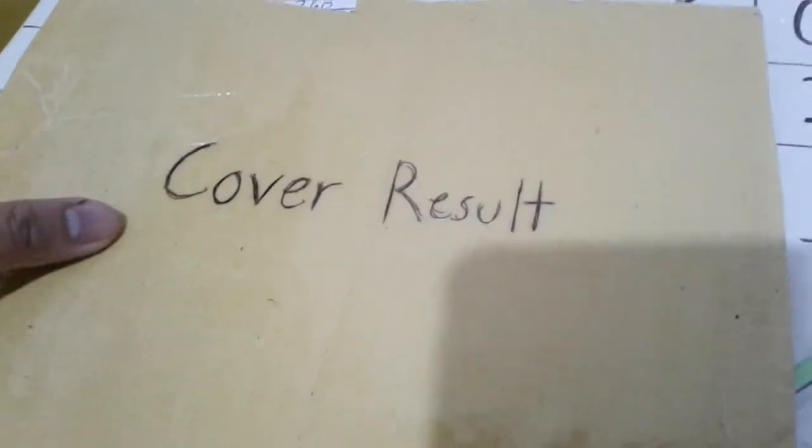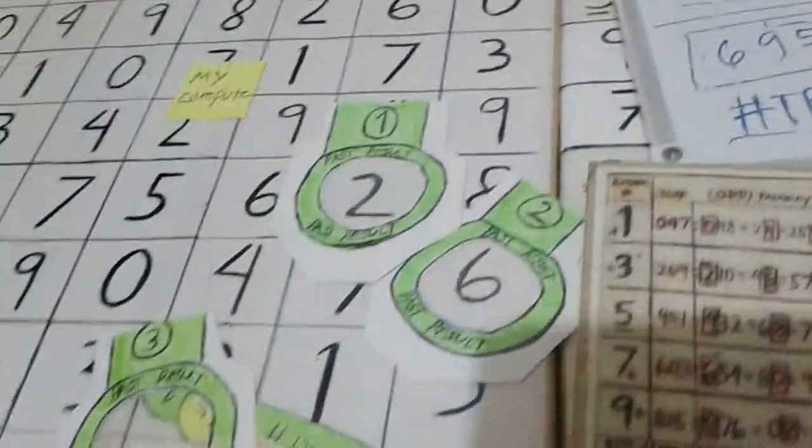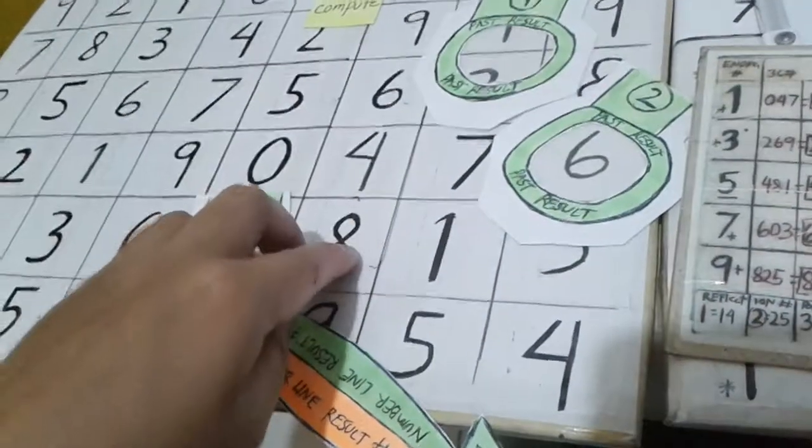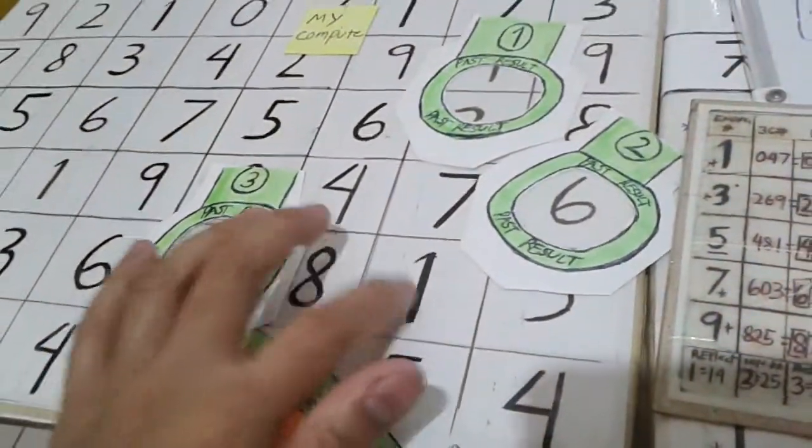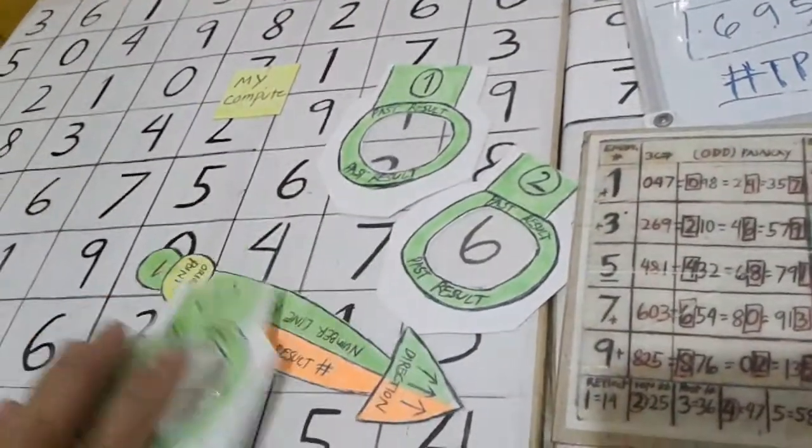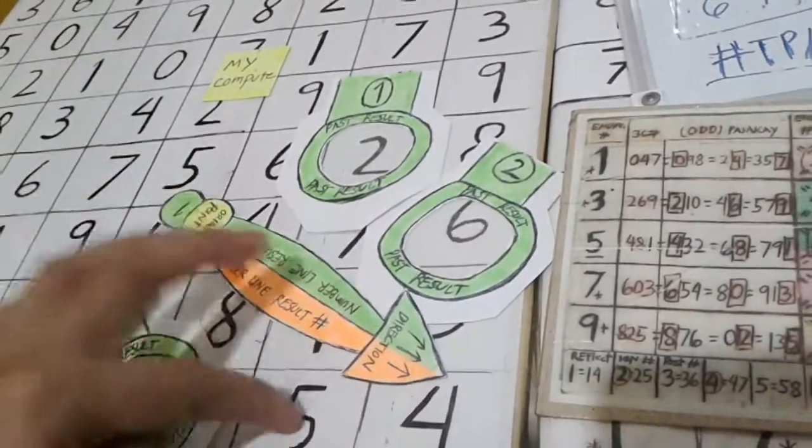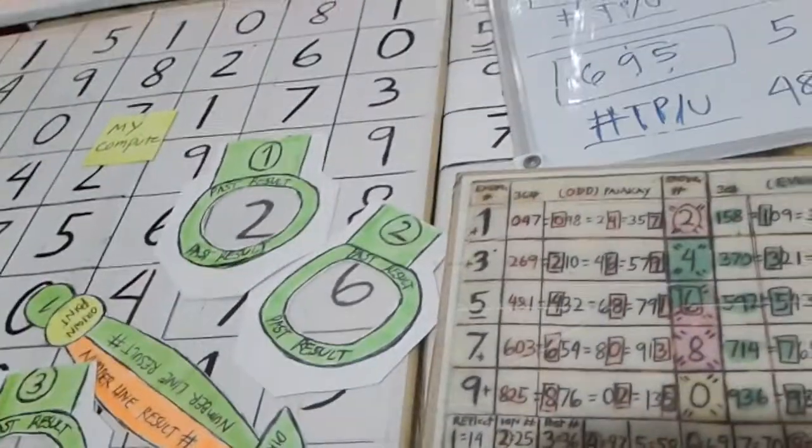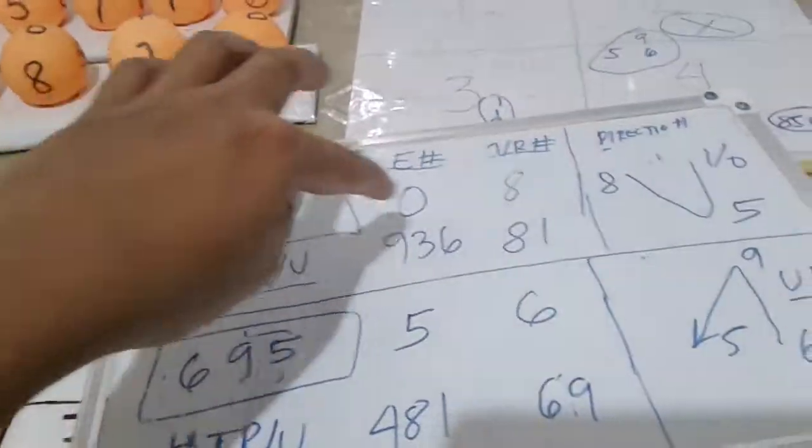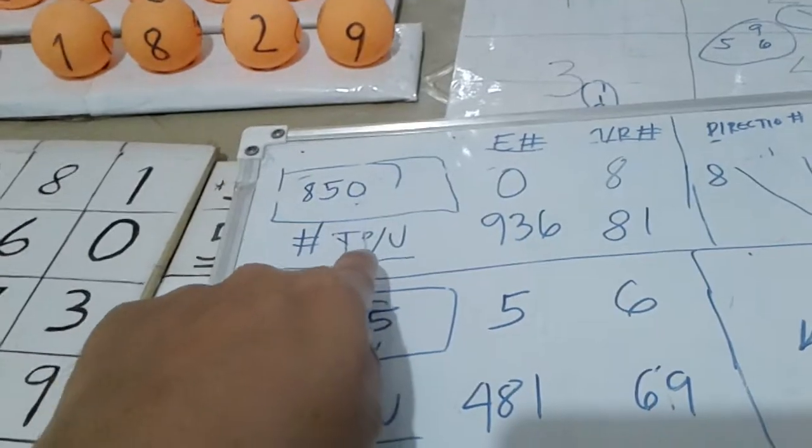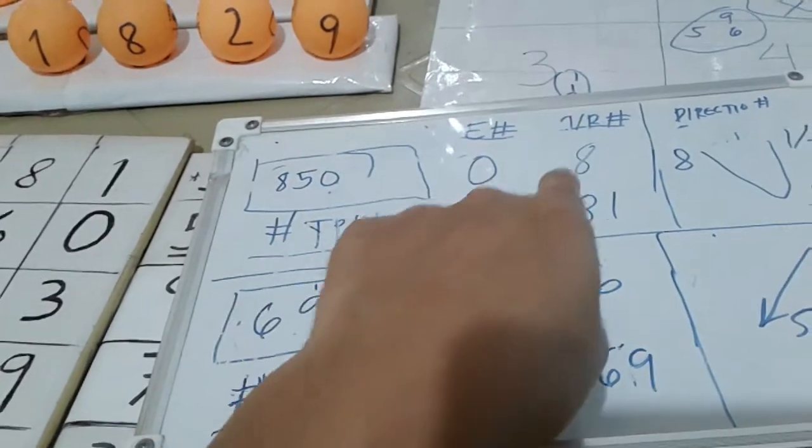You see that 850, it's just over 851. So 850, the 1 will become 0, it's indicated. We choose 716. Later on we need the past result. This is the past result, the green one. It's 269, it's correct, but our number is 716. The result is 850.